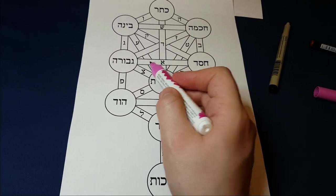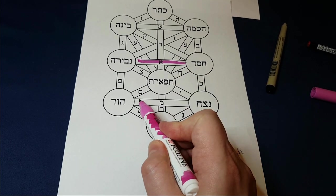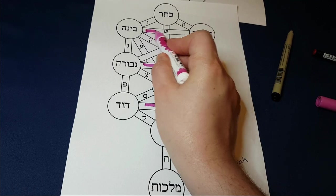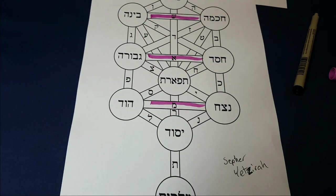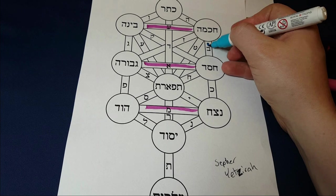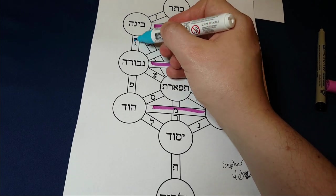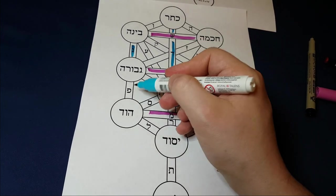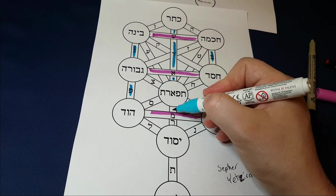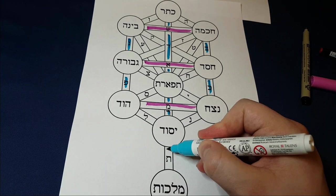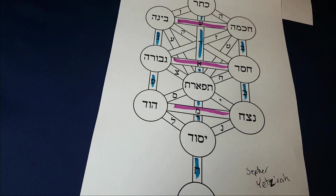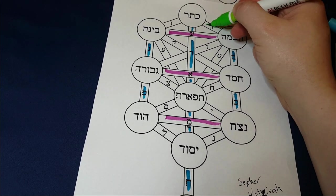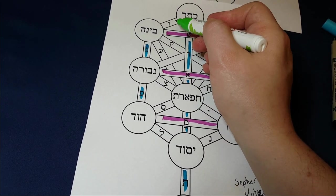Basically, we've got three mother letters here. The Aleph, the Mem, and the Shin. And in blue, we've got the double letters over here. There's one, two, three, four, five, six, and seven.